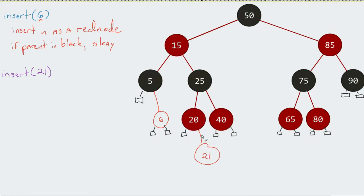The problem is, if we're following the rules of a red-black tree, the red node must always have black children. And right now, I have a red node with a red child.